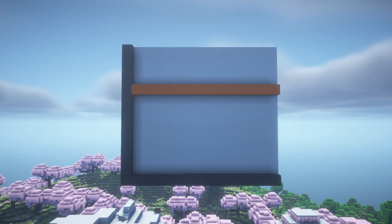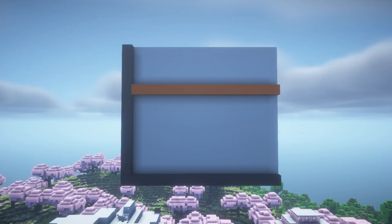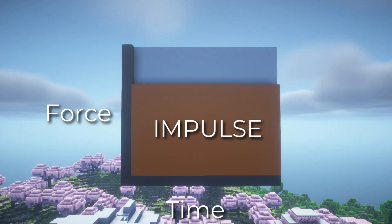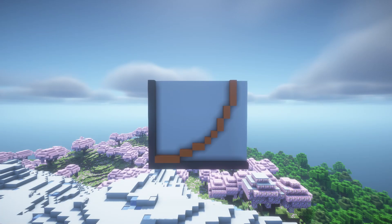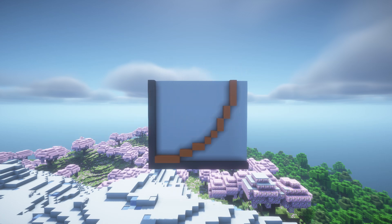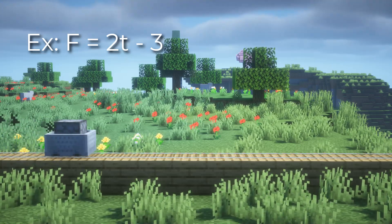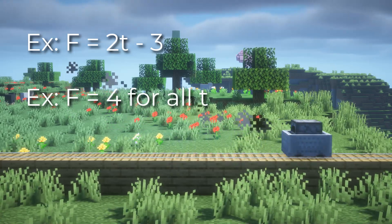If you watched the last video about work, you'll know that work is the area under the graph for a force versus distance graph. Impulse is very similar — it is the area under a force versus time graph. This is also the reason why impulse equals force times delta time if the force is constant. If force is not constant, then the true formula is J equals the integral of F dt. So on a force versus time graph, the area under the graph will be the impulse. In word problems, they usually give you either a force equation involving time, in which case you take the integral, or just state that force is constant.